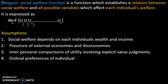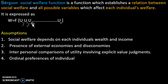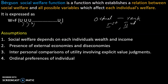In this equation, W is social welfare. It is a function of U1, U2, U3 — the utilities of individuals in society. These utilities are expressed in ordinal terms. Ordinal utility refers to preference ordering — first preference, second preference — rather than quantitative cardinal measurement.